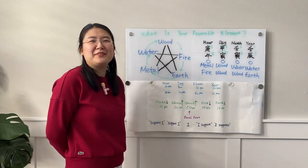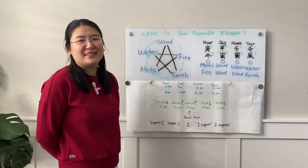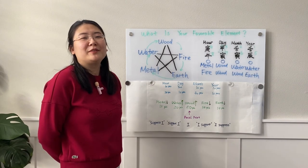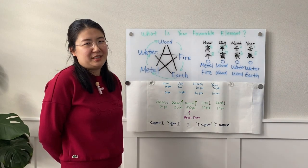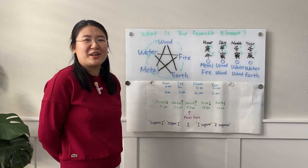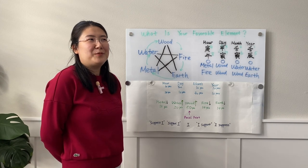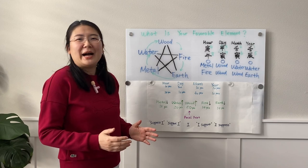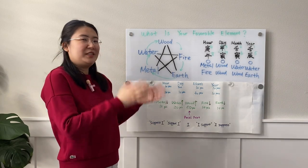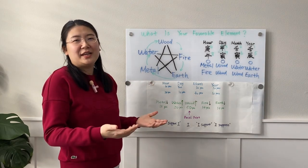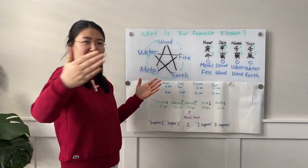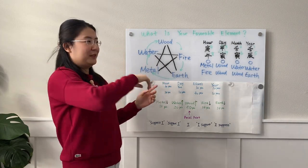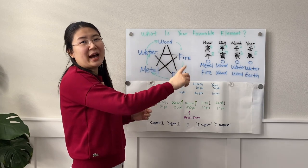Hi everyone. Welcome back to Life Tips by Ning. Today's video is about how to find out your favorable versus unfavorable energy or elements in a bazi chart. Why does that matter? Because the favorable versus unfavorable element over each year or every 10 years of your life path will give you a really quick macro level view of your life trend and track.